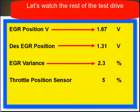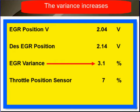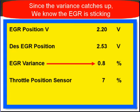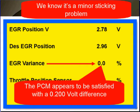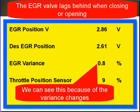Let's watch the rest of the test drive. The variance increases, then the variance decreases. Since the variance catches up, we know that the EGR is sticking — it may be lagging behind, but it does catch up. We know it's a minor sticking problem. Note that the EGR position voltage is 2.7 tenths, the desired position is 2.9, and the variance says it's zero. That means the PCM appears to be satisfied with a 0.2 volt difference. The EGR valve lags behind the closing and opening of the EGR valve.